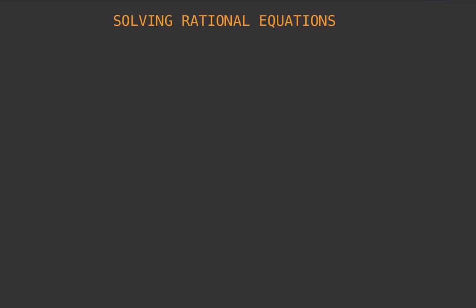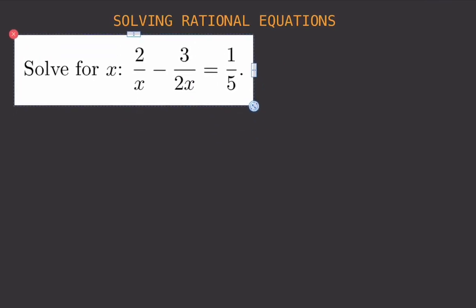For our first example of rational equations, we have 2 over x minus 3 over 2x equals 1 over 5. We can already see the difference from the earlier equation — this involves rational expressions, so this is called a rational equation.